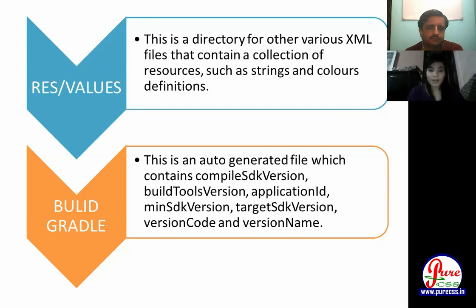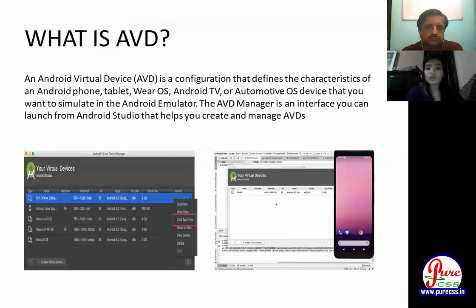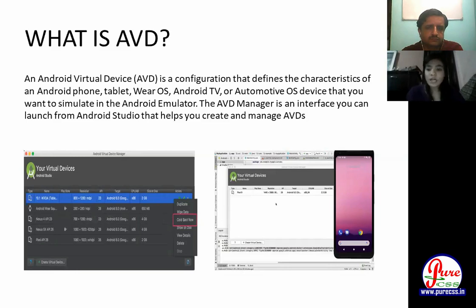An AVD (Android Virtual Device) is a configuration that defines the characteristics of an Android phone, tablet, VR, or TV device. Before running your app, you have to install a virtual device. If you don't have a virtual device, you can run it on your phone via USB debugging. You can also simulate using the Android emulator. The AVD Manager is an interface you can launch from Android Studio to help you create and manage AVDs.